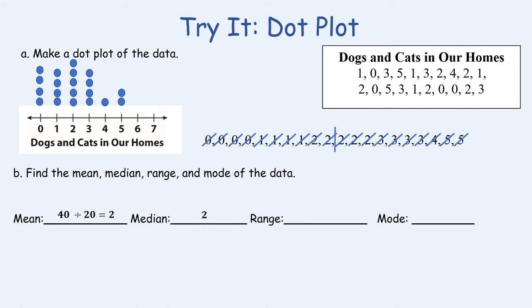Now let's find the range which will tell us how our data varies. The range in this case is the greatest minus the least and that's 5 minus 0 which is 5. And lastly the mode which is the number that occurs the most you can tell visually by the dot plot that it is 2. 2 is occurring 5 times which is the most dogs and cats in the home.